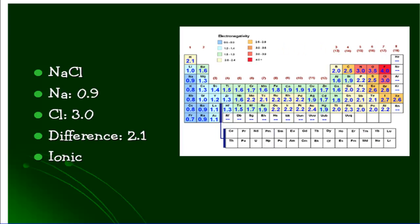Our first one is sodium chloride. If we look at sodium, it's 0.9. And if we look at chlorine, it's 3.0. If we subtract, we're going to get 2.1. So 3.0 minus 0.9 gives us 2.1. That number is greater than 1.7, so we're going to have an ionic bond.